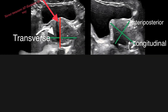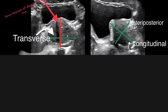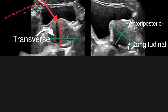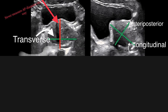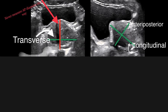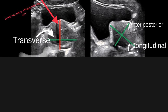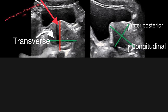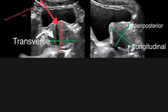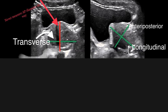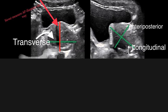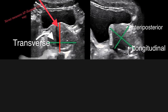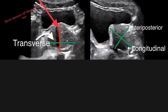Many times patients come with a full bladder. In those cases, take a repeat measurement of the prostate after voiding, or in a partially filled urinary bladder state. This was about the correct methodology of measuring prostatic volume on ultrasound.